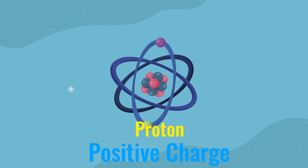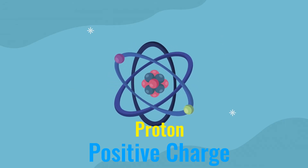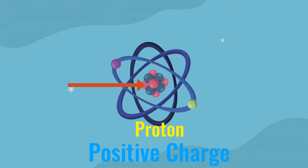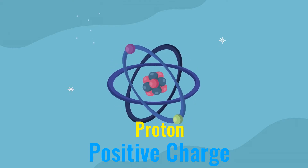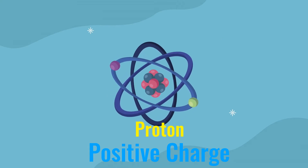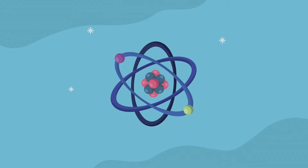Protons are tiny subatomic particles that have a positive charge and they have a mass. Both of those things are important. A positive charge — we'll talk about why that's important in a minute. And mass means that they have substance that gravity can be attracted to. They're physical material. So they have a positive charge and a mass of one.